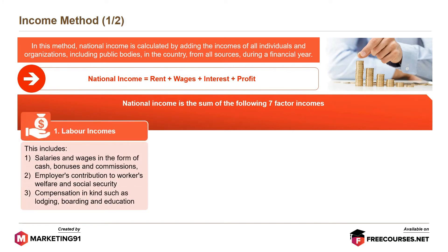Labor incomes. This includes: 1. Salaries and wages in the form of cash, bonuses and commissions. 2. Employers' contribution to workers' welfare and social security. 3. Compensation in kind such as lodging, boarding and education.